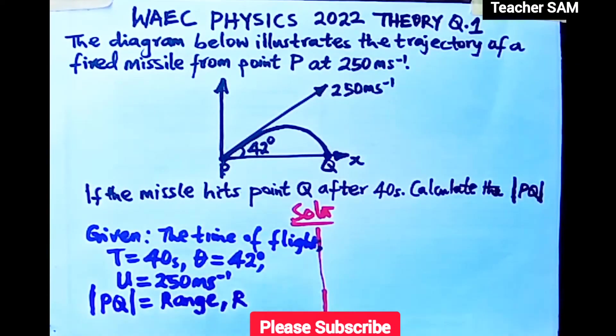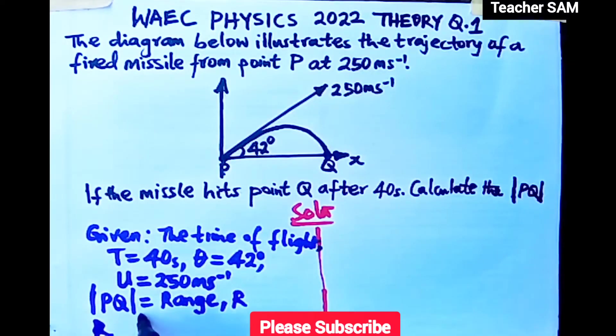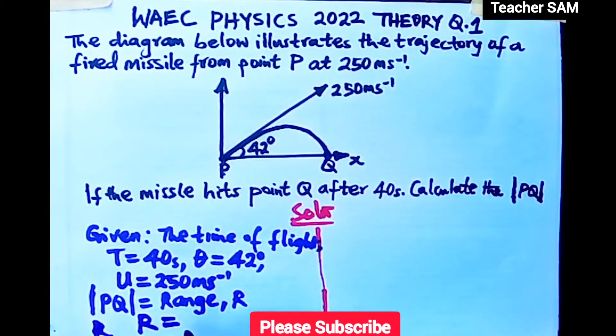We know that our range R equals Ux times T.